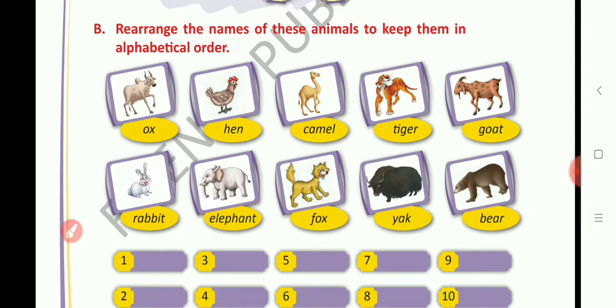So, some animals names are written here. I am reading them: Ox, rabbit, hen, elephant, camel, fox, tiger, yak, goat, bear.